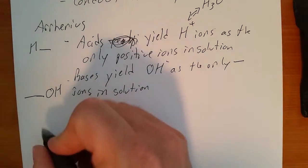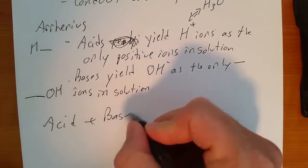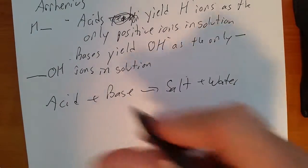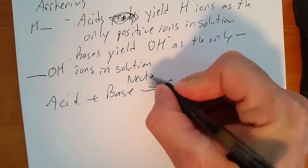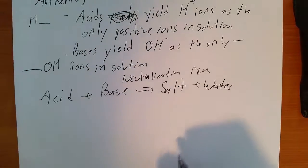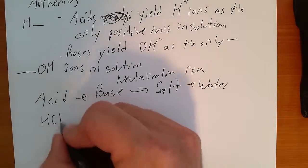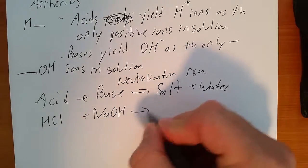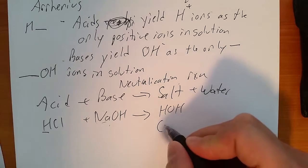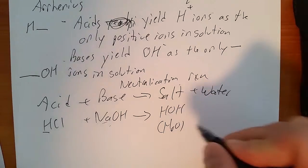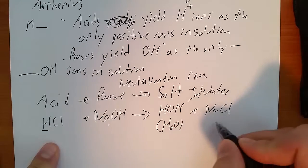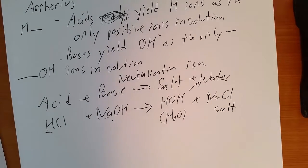All right, so acid plus base makes salt and water. That is a neutralization reaction, a special kind of double replacement reaction. So acid HCl plus a base NaOH is going to make, the hydrogen replaces the sodium, HOH, which is water, and NaCl, which is salt. That's a neutralization reaction.